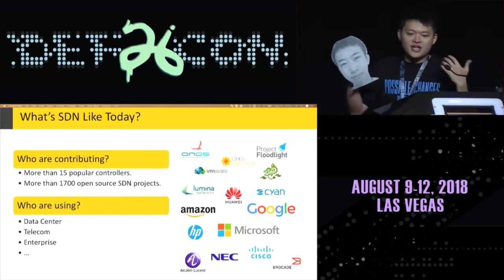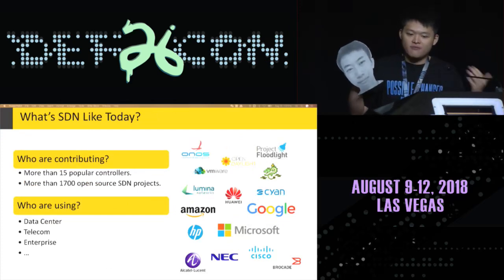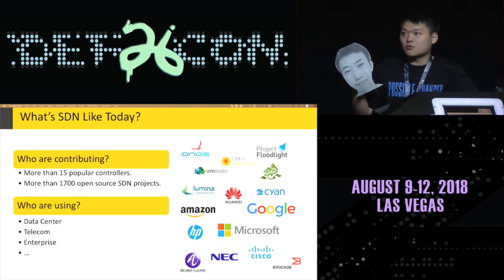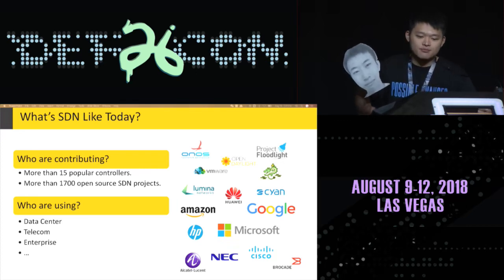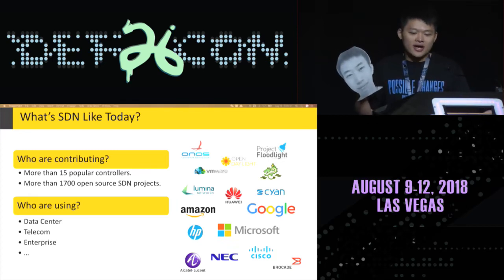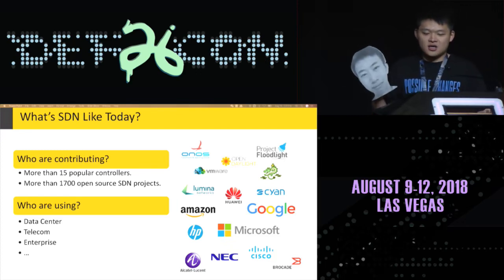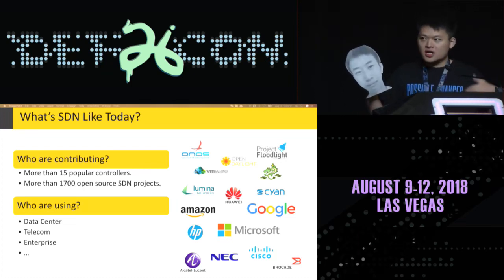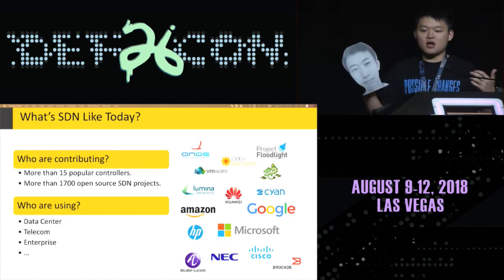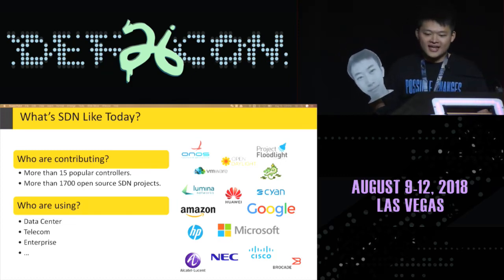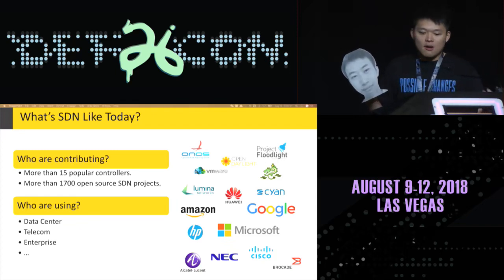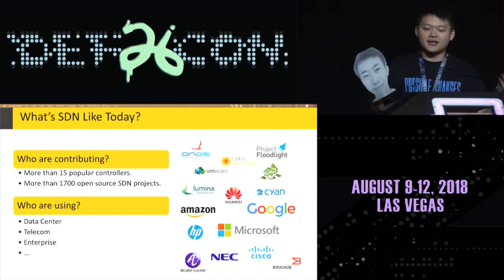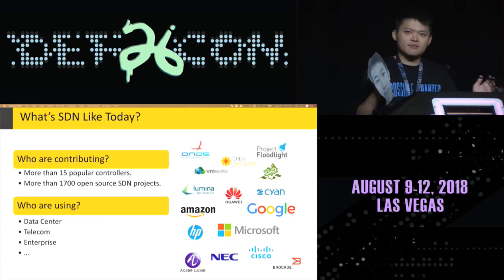This new architecture is now widely deployed in production environments with growing communities. Open source organizations like the Linux Foundation support a large number of SDN projects, like OpenDaylight, Floodlight, ONOS, and companies like Huawei and Cisco have also released their commercial products and applications. The growing community accelerates the replacement of network infrastructure. World-leading web-scale providers such as Google and Microsoft are deploying SDN in their data centers.